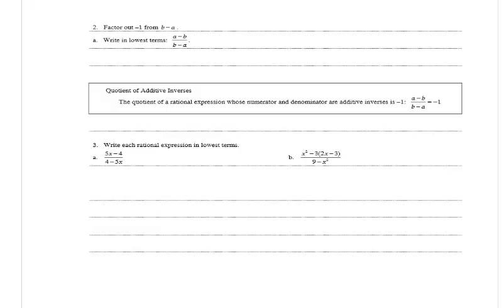In number 2, it asks us to factor out a negative 1 from B minus A, and then write it in lowest terms. So we have A minus B divided by B minus A. If we factor a negative 1 out of B minus A, the A becomes positive and the B becomes negative. We can see that the A minus B's cancel, and we get 1 divided by negative 1, which equals negative 1.